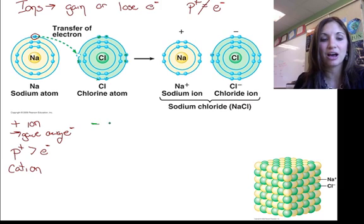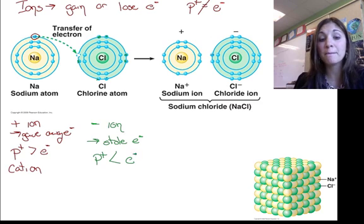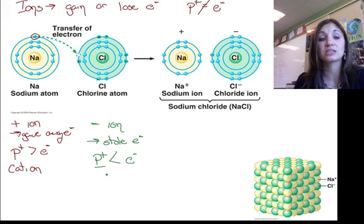So in this example, for a negative ion, then we have fewer protons than electrons. Remember, protons are forever. The protons aren't changing. It's the number of electrons. And I've become an anion.